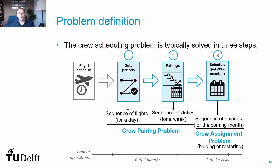The crew scaling problem is divided into two smaller but still complex problems: the crew pairing and the crew assignment problems. We start by developing a set of duties based on the combination of flights for a single day. This set of duty periods is the set of all combinations of flights that can be flown in a single day, given the flight schedule and the time-space continuity. Imagine how many duty periods could be possible for an airline flying more than 100 flights per day, plus other duties like training or office hours.